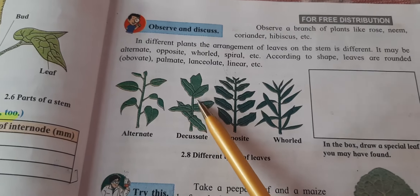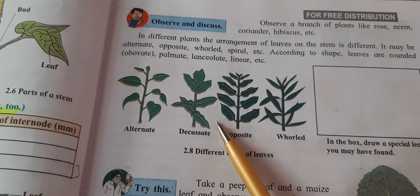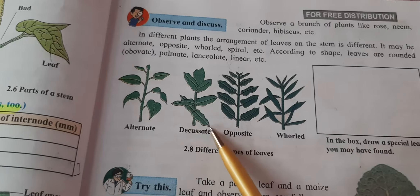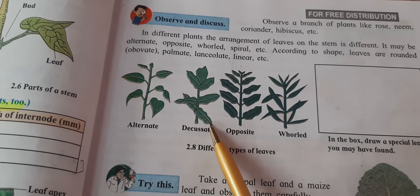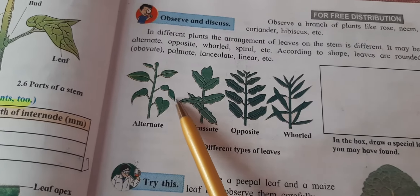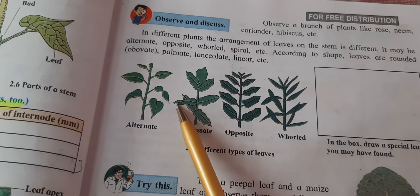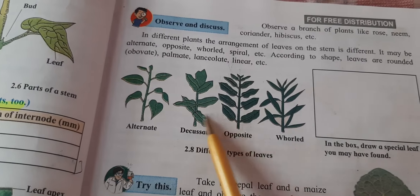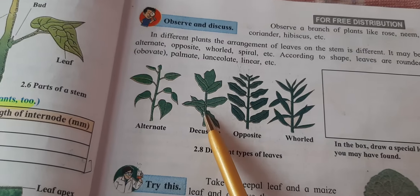In this second diagram we can see the arrangement of the leaves is at a right angle structure, one leaf at a time along the stem.